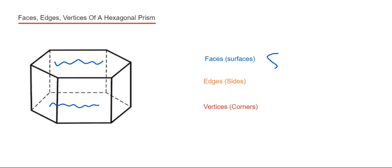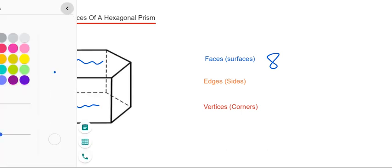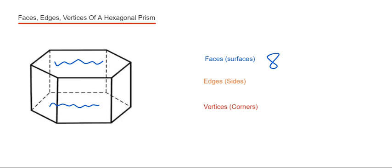So let's do the edges then next. The edges are the sides of the prism. This is where two faces meet. A quick way to do this is just count the lines which you can see.